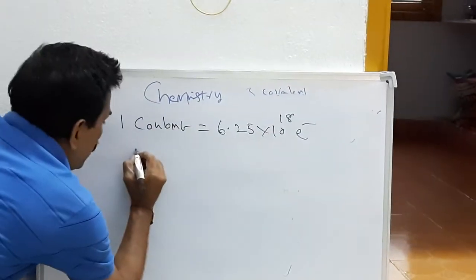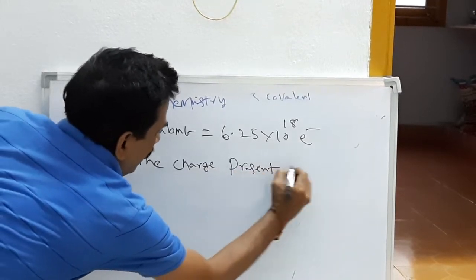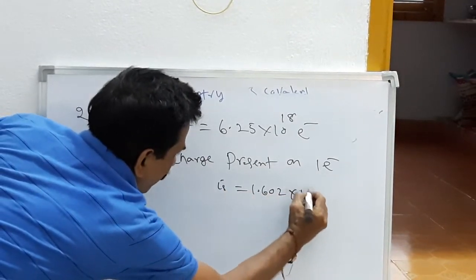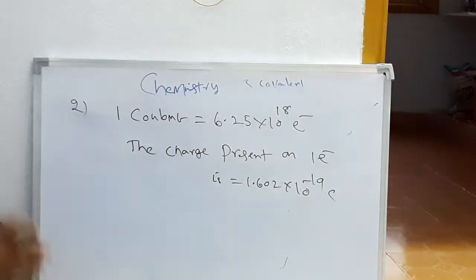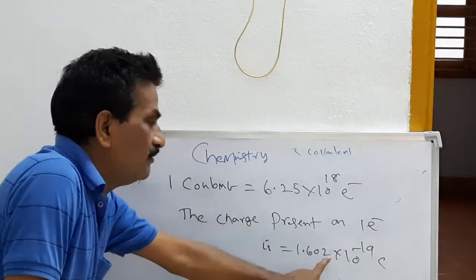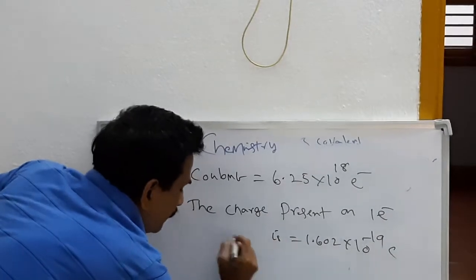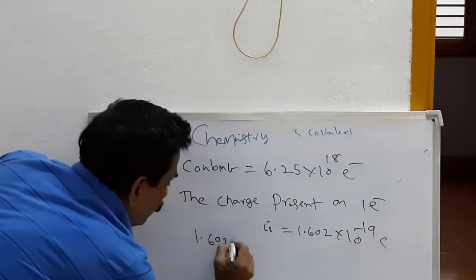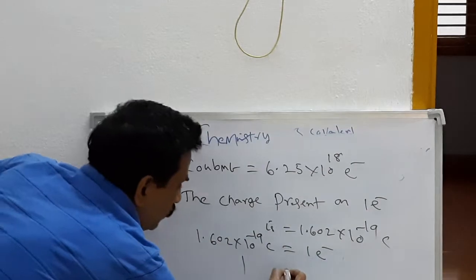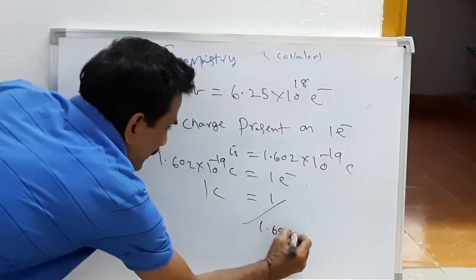You know pretty well that the charge present on one electron is 1.602 into 10 to the power of minus 19 coulombs. So 1.602 into 10 to the power of minus 19 coulombs corresponds to 1 electron. Now, for one coulomb, how many electrons are there?